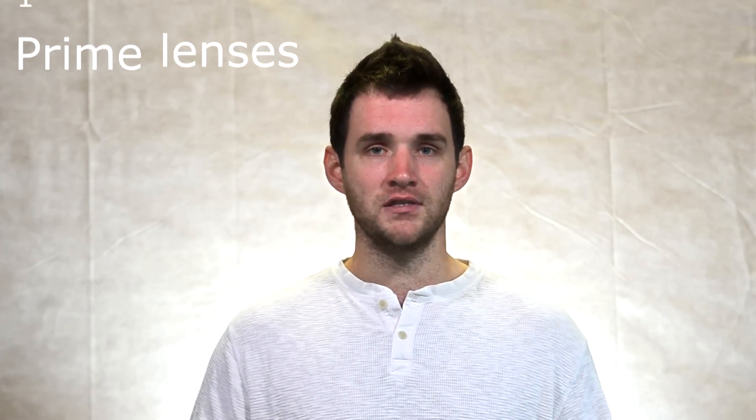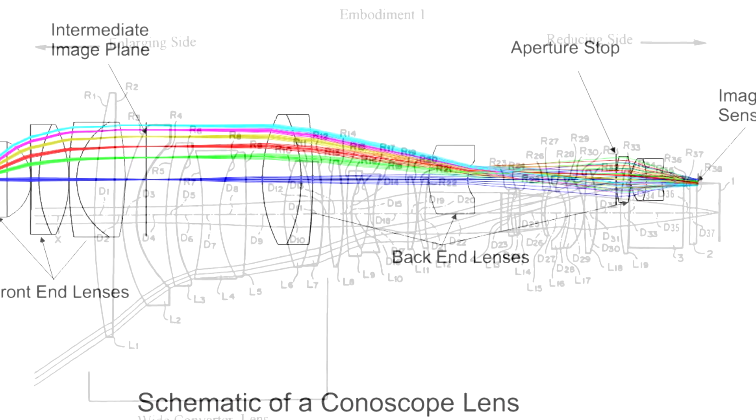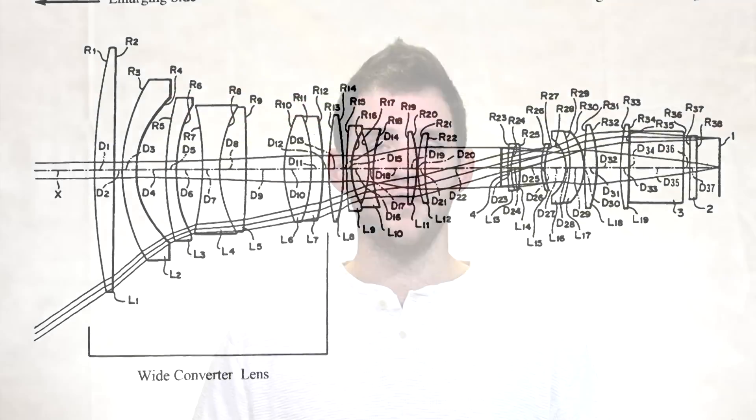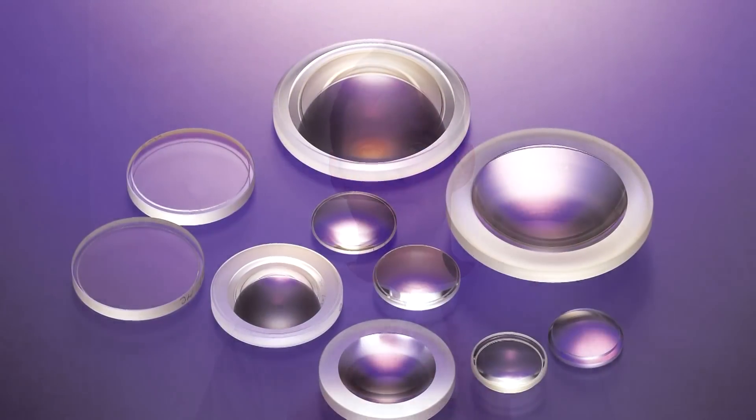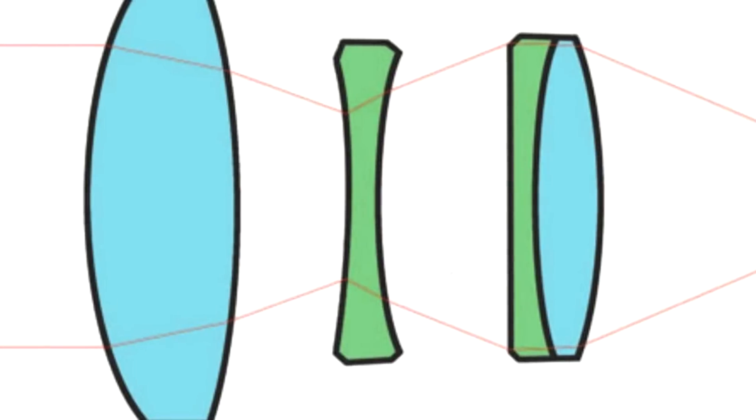So, prime lenses have one focal length, superior image quality, and wide apertures for great low-light performance and beautiful bokeh. We're not really going to go into the construction or physics of the interworkings of these lenses because it's insanely complex and not really something you need to know. One thing you may need to know is that the circular glass components inside the lenses are what's known as elements. Every lens has multiple elements — several different sizes of glass inside the lens which bend light in particular ways to achieve the focal length.